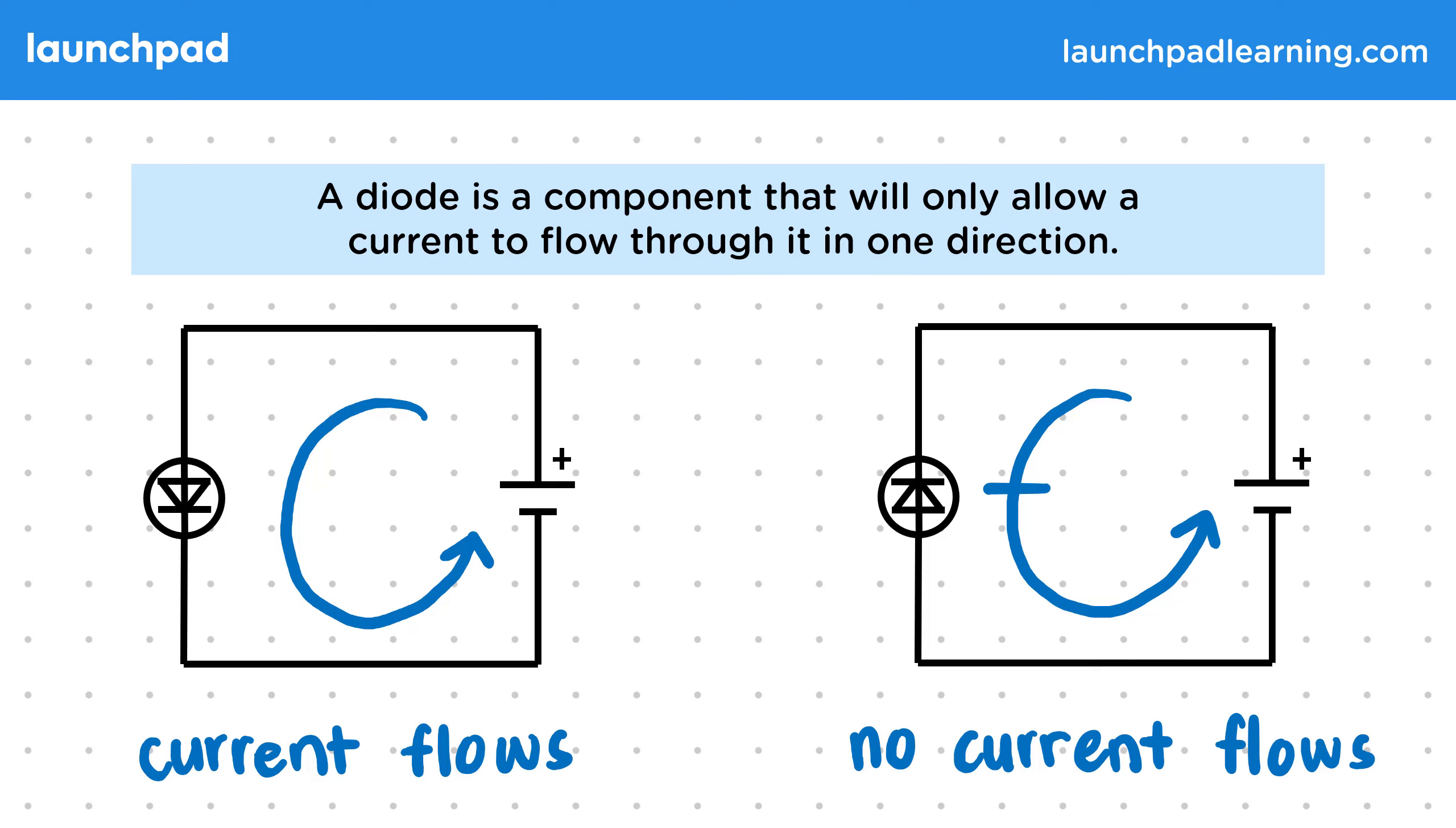This makes diodes very useful in large complex circuits, where we need to make sure currents don't try to flow back on themselves. But how does a diode stop a current?